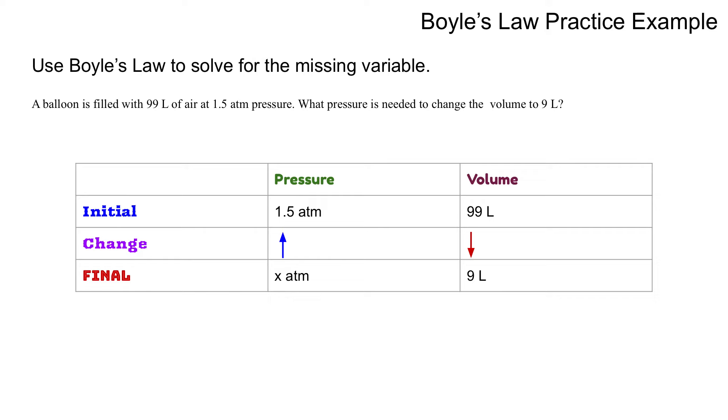I must have divided by 11, which means if I'm dividing my volume by 11, I multiplied my pressure by 11. So 1.5 times 11 is 16.5. The volume was divided by 11, which means the pressure must have been multiplied by 11. The pressure needed is 16.5 atm.